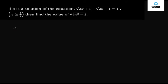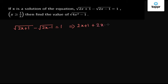We write down the equation: root over 2x plus 1 minus root over 2x minus 1 equals to 1. Now squaring on both sides of the equation, we get 2x plus 1 plus 2x minus 1 minus 2 into root over 2x plus 1 into root over 2x minus 1, equals to 1.